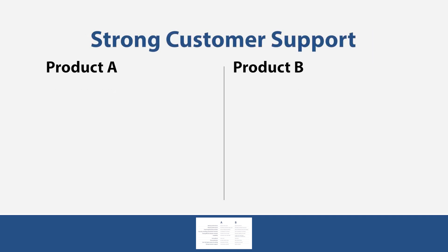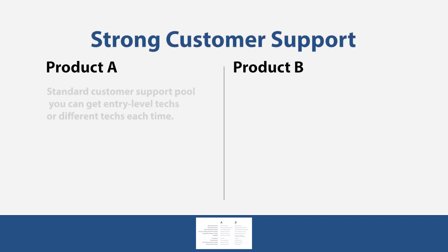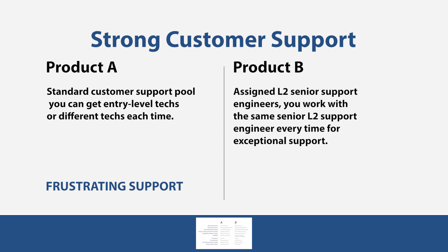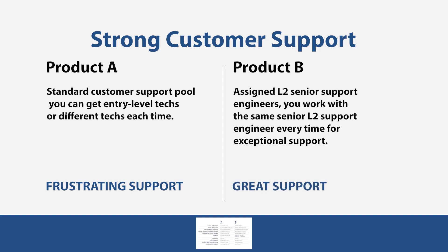Strong customer support: Product A relies on a standard customer support pool where you may get entry-level techs or different techs each time — resulting in frustrating support. Product B provides assigned level 2 support engineers, so you work with the same level 2 support engineer every time for exceptional support — resulting in great support.